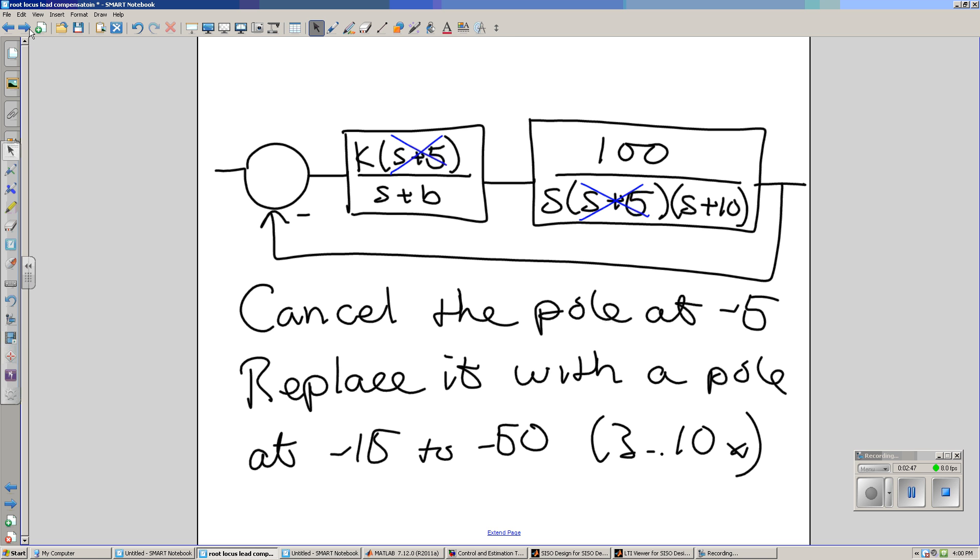So with that, I would take the pole at minus 5 and get rid of it. Replace it with a pole somewhere faster than minus 5. The rule of thumb is typically put the pole between 3 and 10 times faster than you started with. Meaning, put the pole somewhere between minus 15 and minus 50.